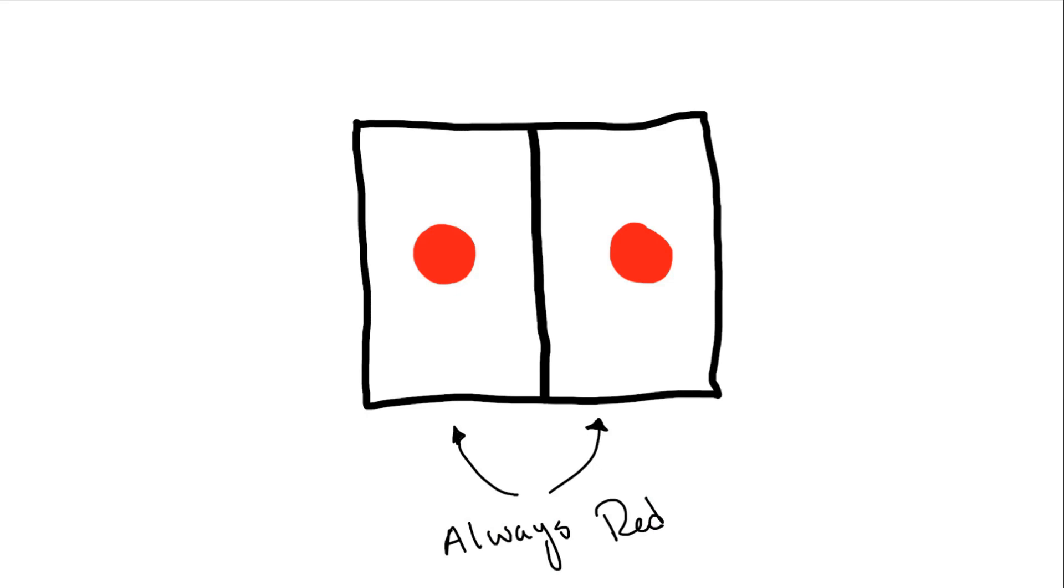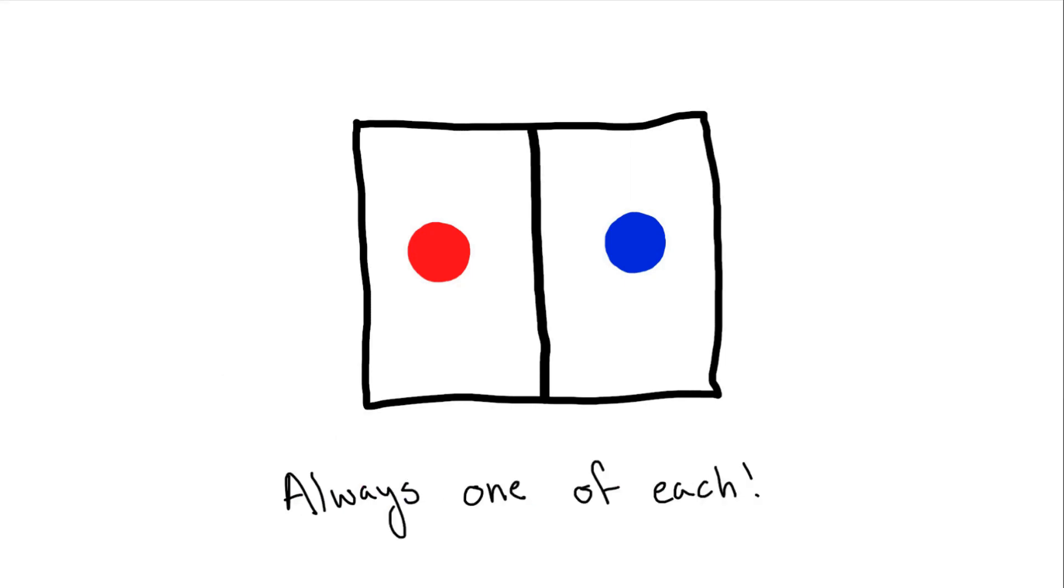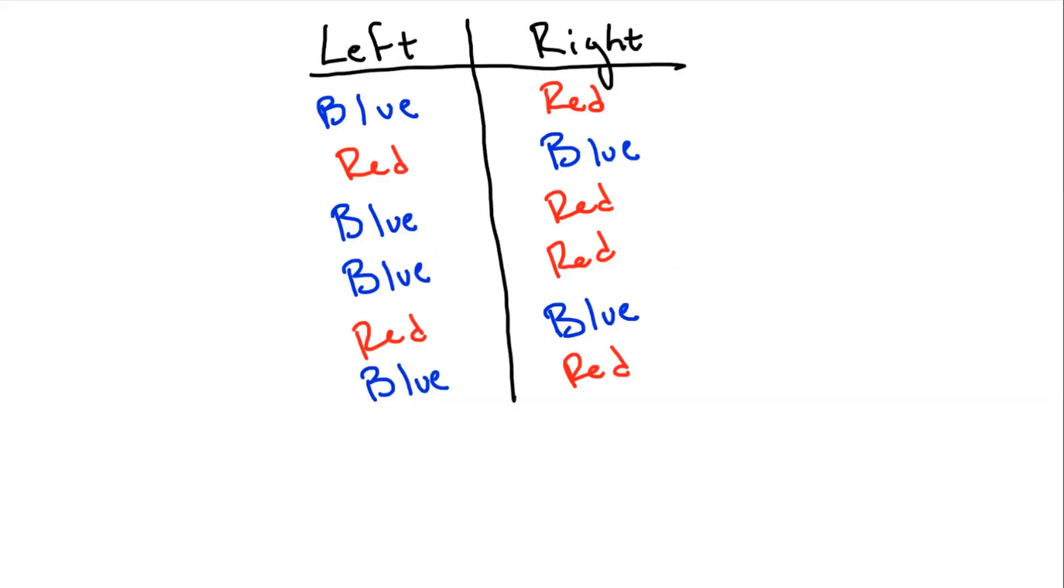To see how entanglement works, say I have a system so that when I drop in two red balls, shake up the box, put in the divider, then open the box, I see one red ball on one side, and one blue ball on the other side. Even though the side that each color ball can end up on will change, I always observe one red ball and one blue ball on opposite sides.